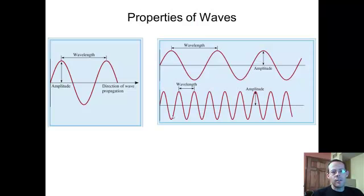Properties of waves. We need to be familiar with several properties of waves. Amplitude is how tall the wave is or how deep it goes. The top of this is called a crest, and the bottom is called the trough.